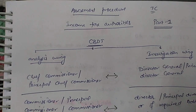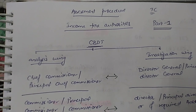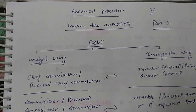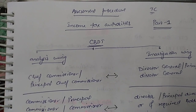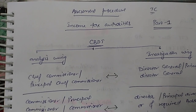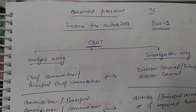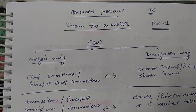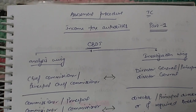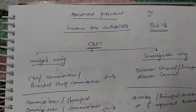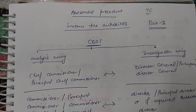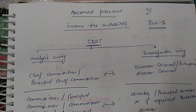The assessment is done by income tax officers, so we need to understand who actually does your assessment. The top most authority in income tax is CBDT — the Central Board of Direct Taxes. Under CBDT we have two sub-departments which work parallel to each other: the Analysis Wing and the Investigation Wing. Let's look at the different officers under these two departments, starting from the lowest.